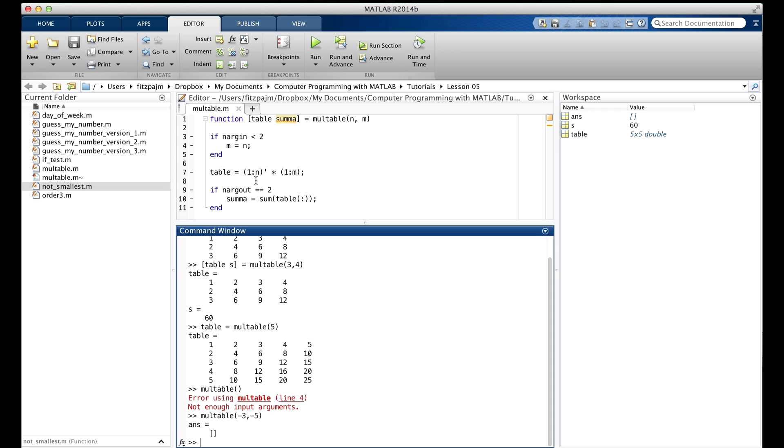Well, the colon operator here, one to n on line seven became one to minus three. Because we gave a minus three for n. And the one colon m became one colon minus five. And as we saw way back in lesson two, when the end is less than the beginning for the colon operator, and we don't include a negative increment with it, the result's an empty matrix. Here we got two of them.